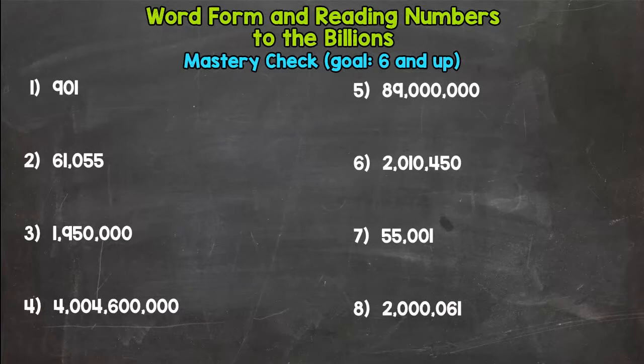Alright, welcome to the Word Form and Reading Numbers to the Billions mastery check. Hopefully you're ready to put these eight numbers below in the word form and we'll see how you do. Your goal is six and up.